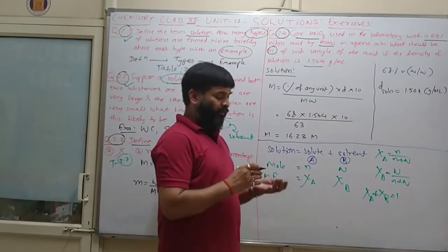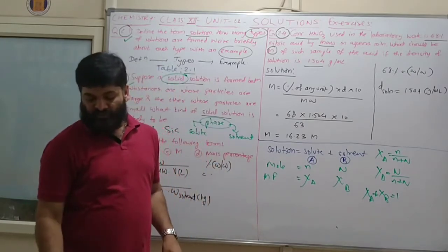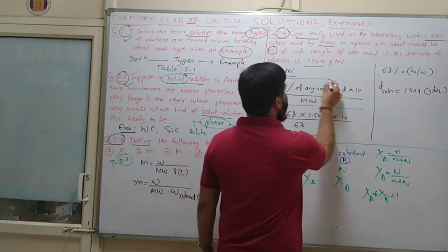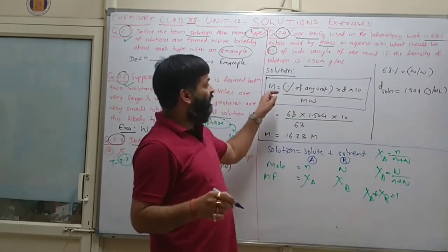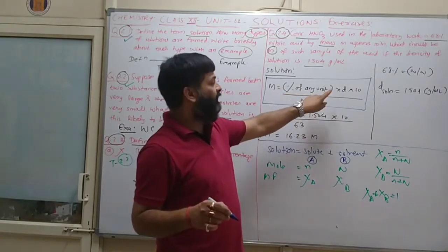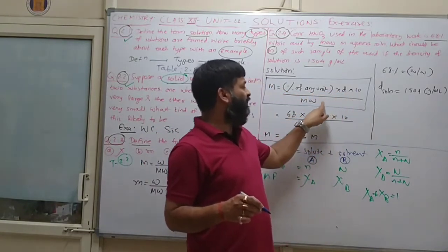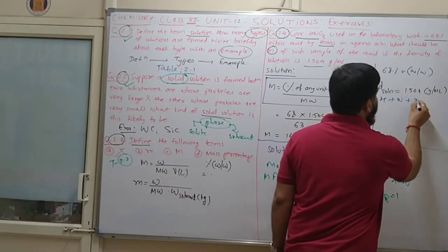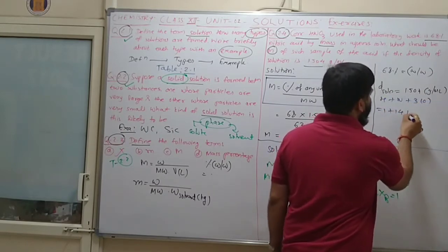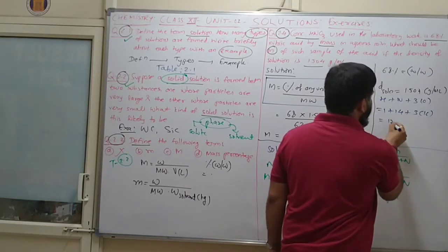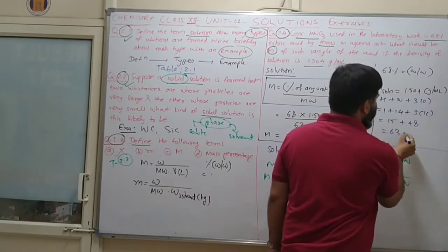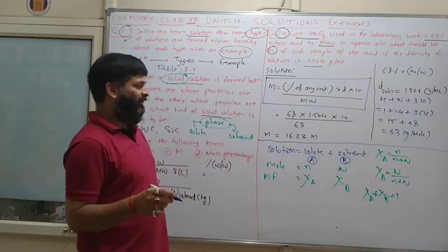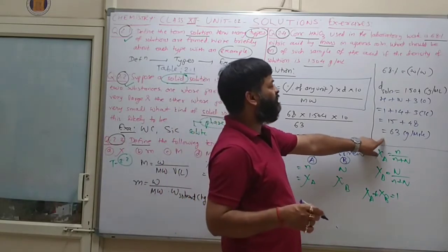Here we have 68% weight by weight, and density equals 1.504 g/ml. If percentage and density are both given, use the shortcut formula: Molarity = (percentage × density × 10) / molecular weight.